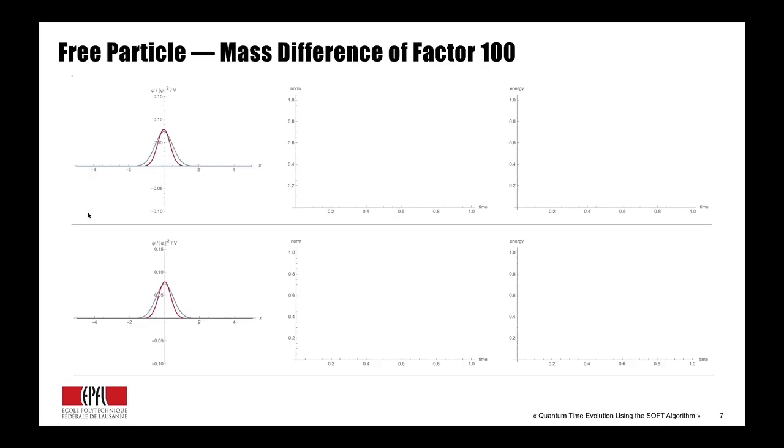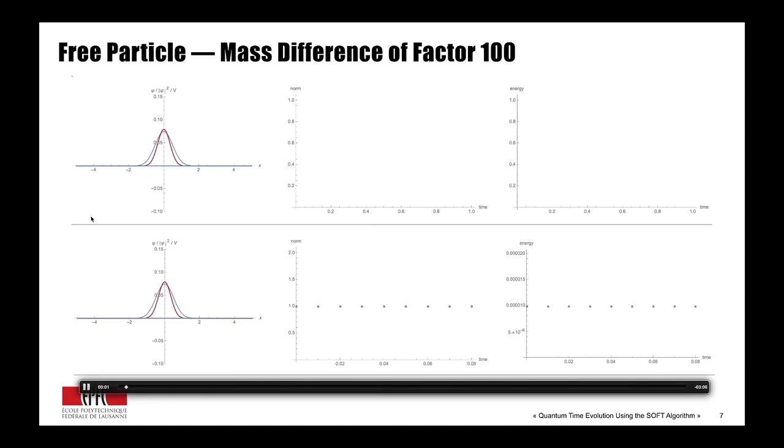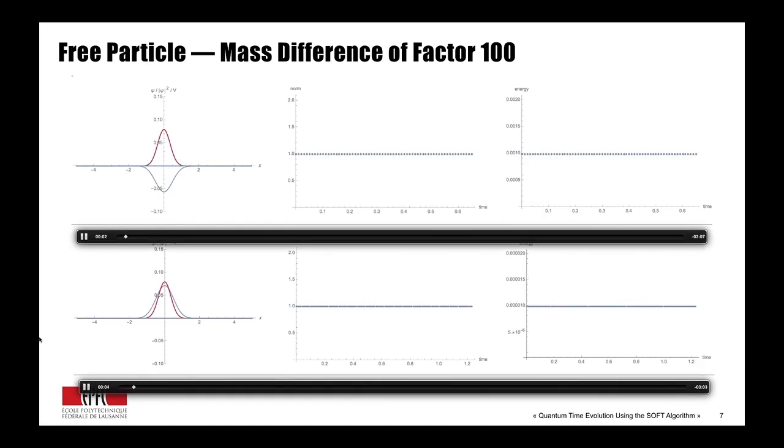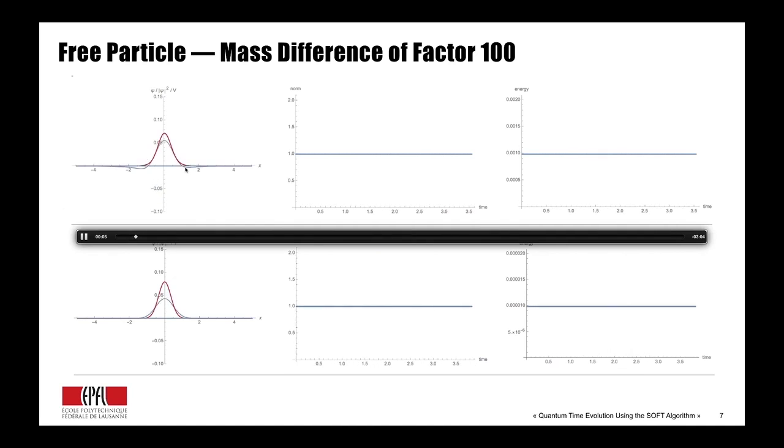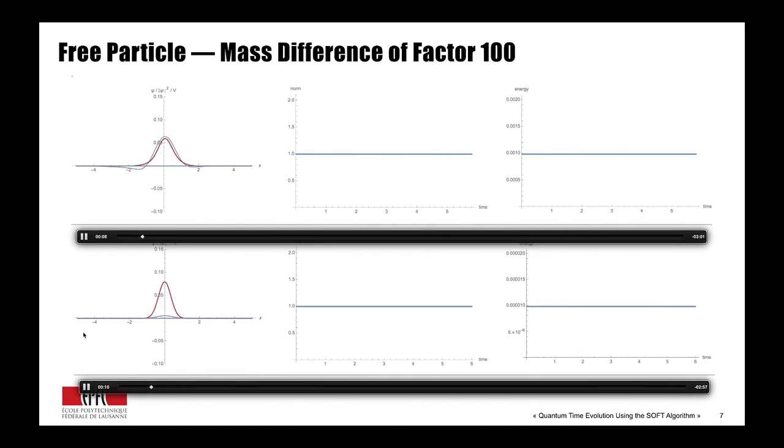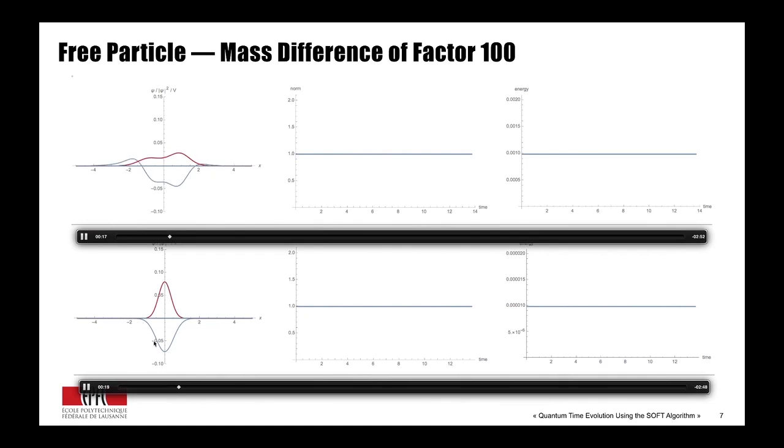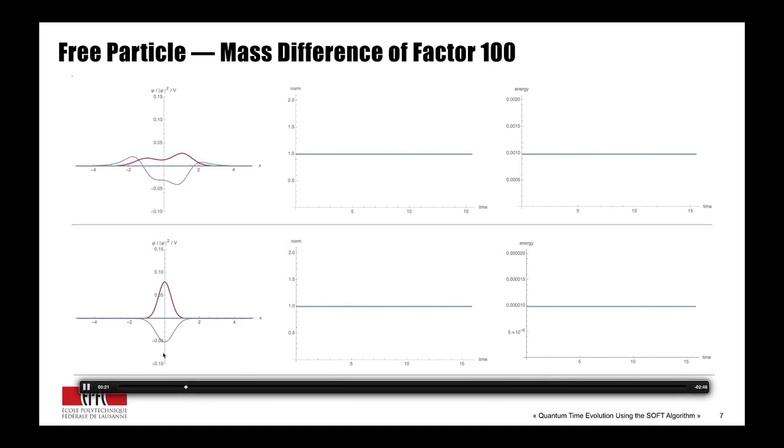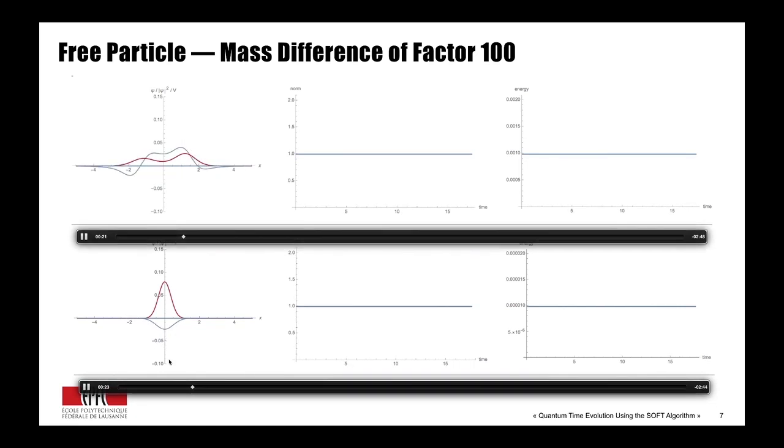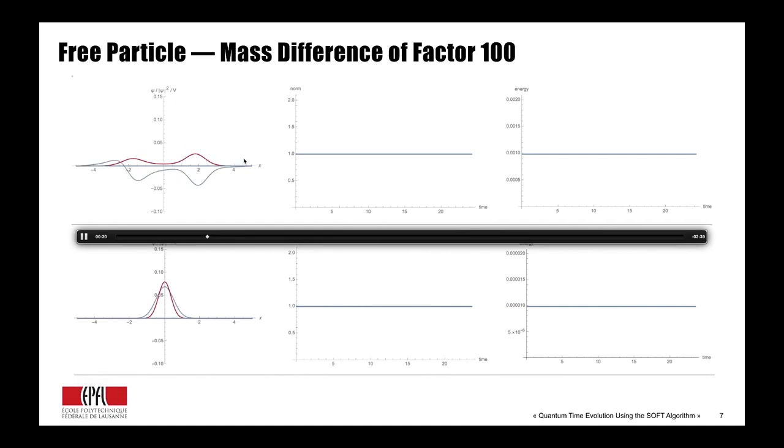Let's apply it to some real examples, for example, for a free wave packet. What I show here is the wave packet of two different masses. So here I have a lighter one, and here I have a heavy one. And what you see in red is psi squared, which is the probability density in Born's interpretation of quantum mechanics. And in blue you have the wave function, and what you see is that both wave functions oscillate.